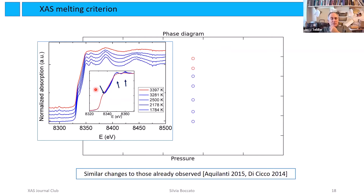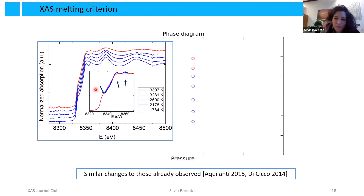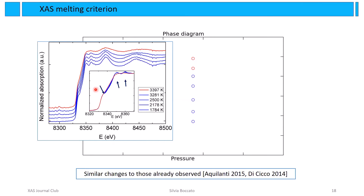A question about distinguishing between melt and glass: X-ray techniques are a snapshot on the femtosecond range and are short-range-order probes, so they don't distinguish well between glass and melt. The speaker acknowledges this: at a certain temperature they assume they get a melt, not a glass. The session moderator then invites the speaker to continue to the next section.